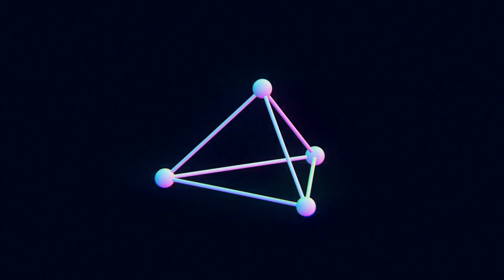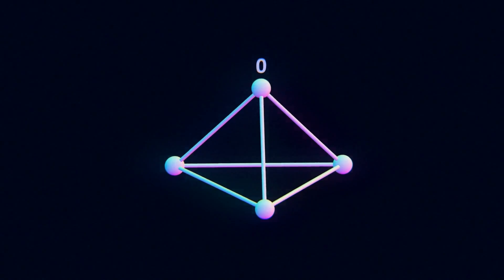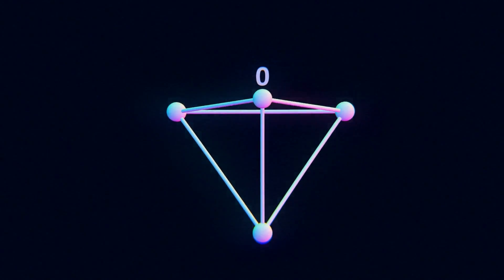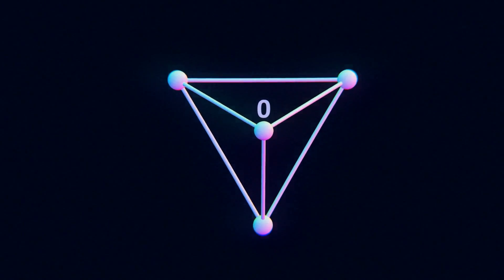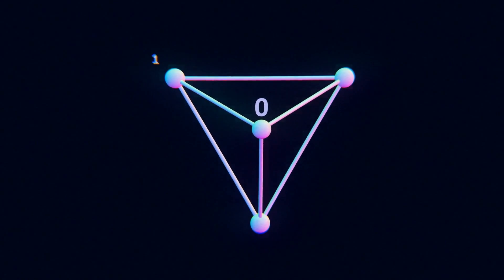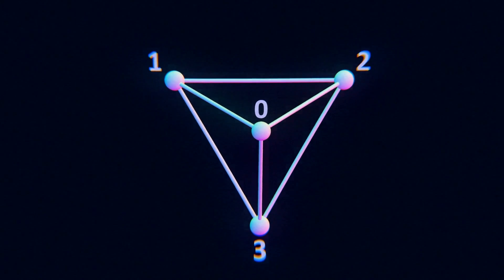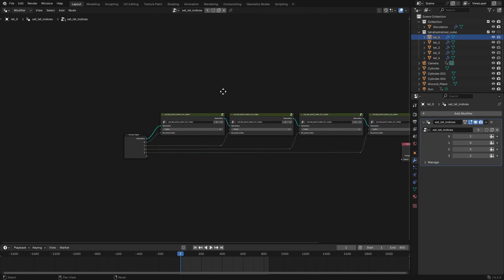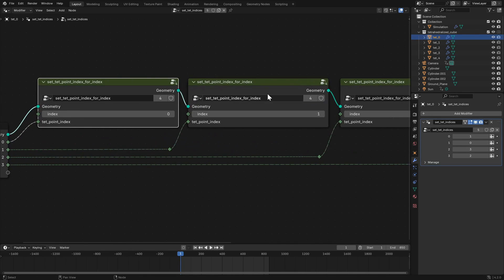The order is determined by choosing one of the points as the first, having an index of zero, orienting the camera so that the chosen point is closest and the other three surround it, and then ordering the remaining three points in a clockwise fashion. We do this with the setTetIndicesGeometryNodeGroup, which manually sets the point index for each tetrahedron point.